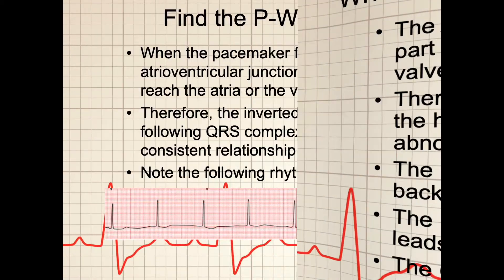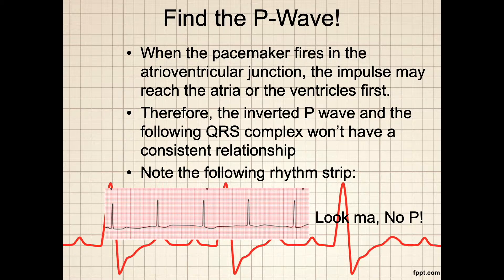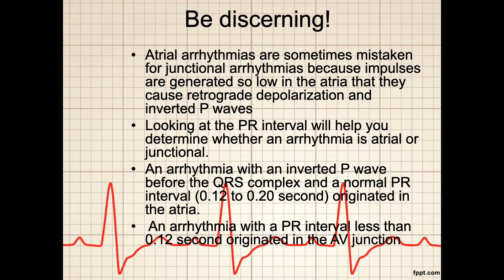Find the P wave. When the pacemaker fires in the AV junction, the impulse may reach the atria or the ventricles first. Therefore, the inverted P wave and the following QRS complex won't have a consistent relationship. Look at this strip — there is no P wave; all impulses are being generated by the AV junction. Be careful, because some atrial arrhythmias are mistaken for junctional arrhythmias when impulses are generated low in the atria, also causing retrograde depolarization and inverted P waves. However, those impulses will have a normal PR interval, so look at the PR interval to determine whether the arrhythmia is atrial or junctional in origin.